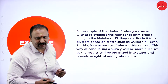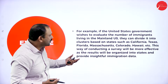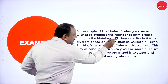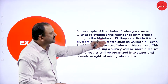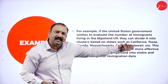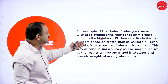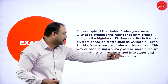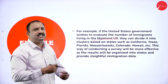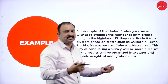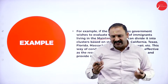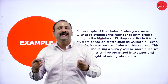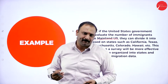For example, if the US government wishes to evaluate the number of immigrants coming into mainland US, they can divide the clusters based on states like California, Texas, Florida, Massachusetts, Colorado, or Hawaii. Going on a demographic basis, you divide into clusters, find out who the people are, what the levels are, and then obtain the cluster sampling result.